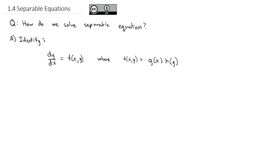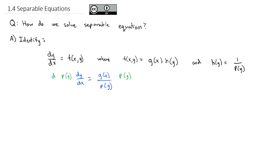Specifically, I'm going to define h of y in terms of its reciprocal, where h of y is equal to 1 over p of y. This means what we're actually dealing with is dy/dx equals g of x divided by p of y. What we can do is multiply both sides of the equation by p of y and also by dx. When we cross off the dx and the p of y, we end up with p of y dy equals g of x dx — and we've separated the x's from the y's.